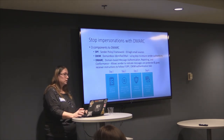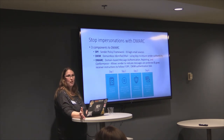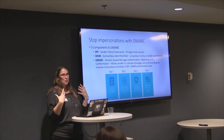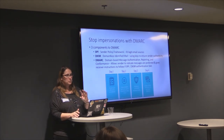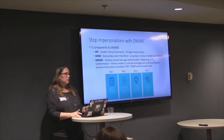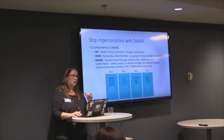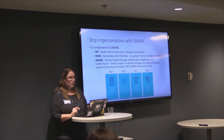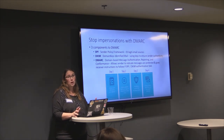The third part is DMARC — Domain-Based Message Authentication Reporting and Conformance — which allows you, the sender, to indicate if your messages are protected and gives the receiver instructions on what to do if SPF or DKIM fails. You work it in order: figure out who your legitimate email senders are, exchange keys with them, get everybody identified, and then enable DMARC to block those fraudulent emails.